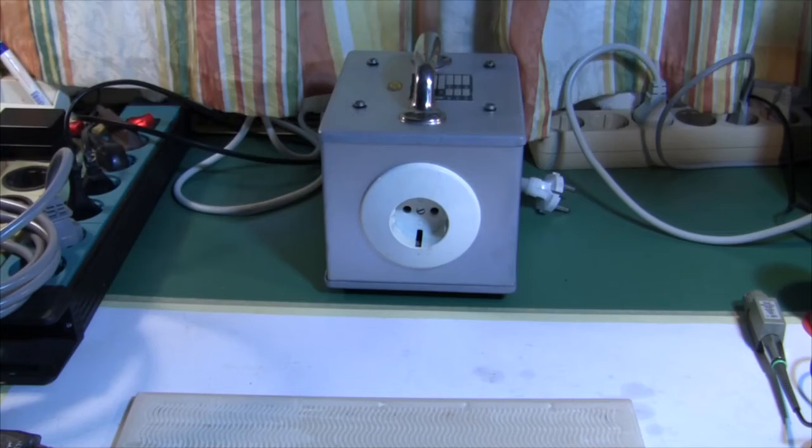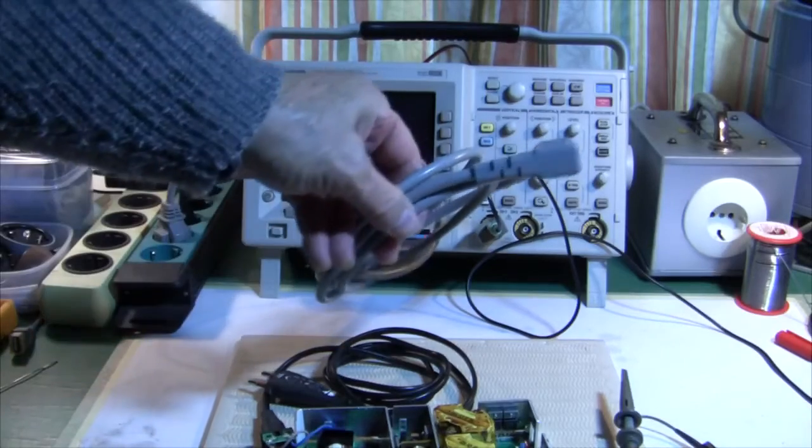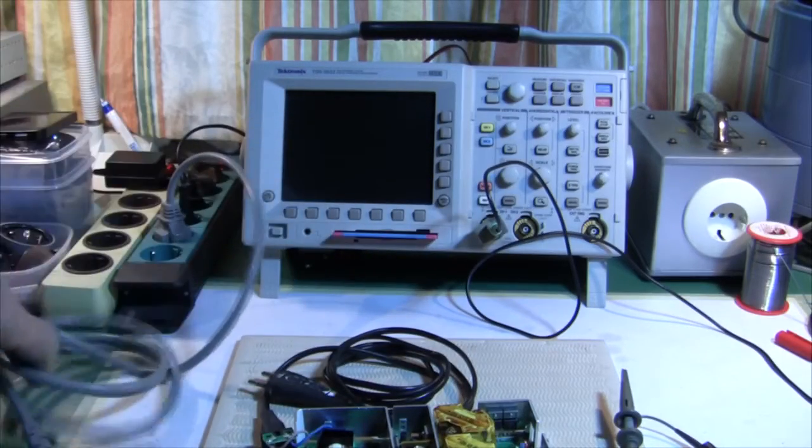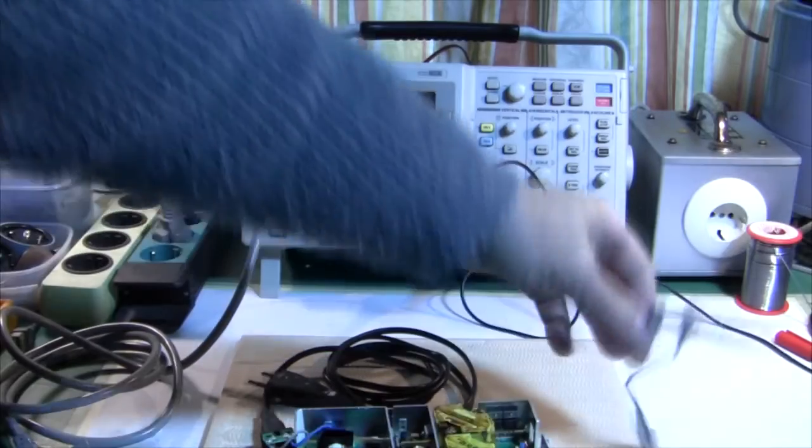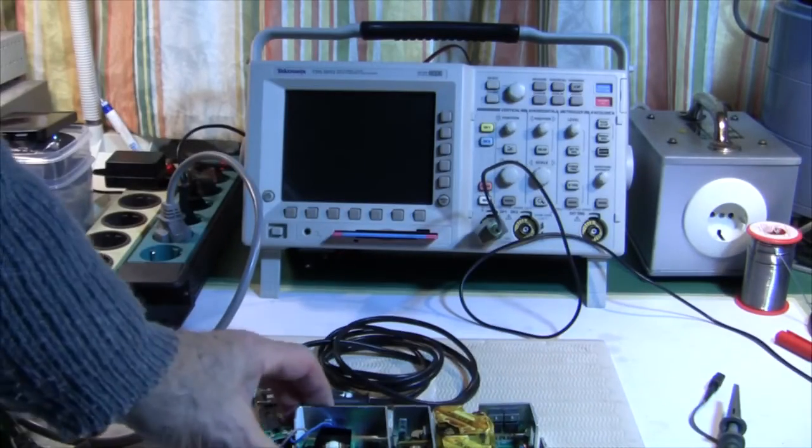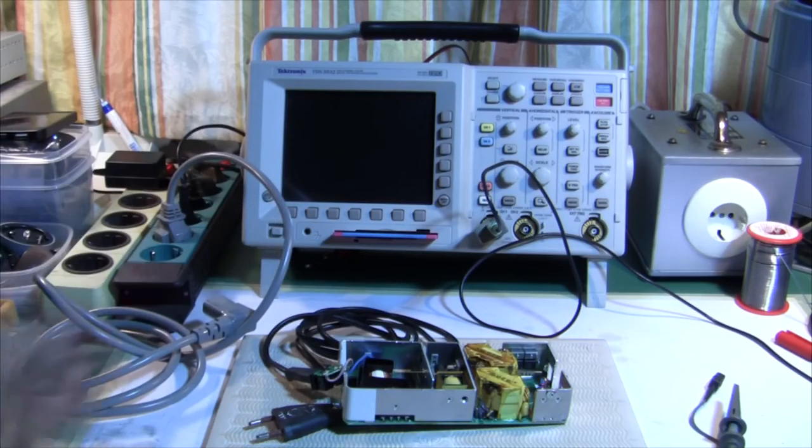The next thing you need is an isolation transformer. Our oscilloscope is connected to protective ground via the mains cable. The ground is on the ground clip of the probe. High voltage is on the parts of the power supply. So we have to break this loop somehow.